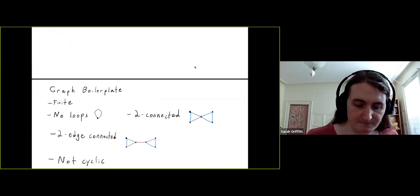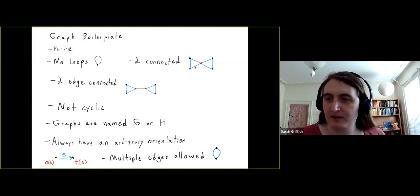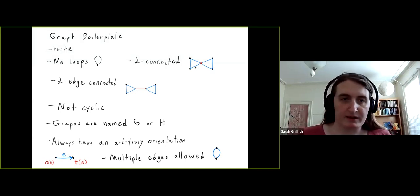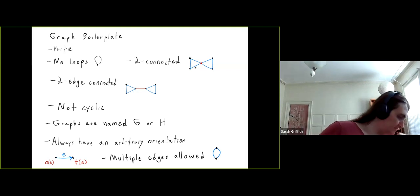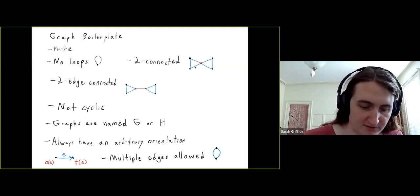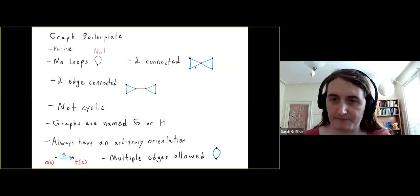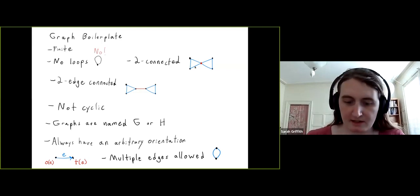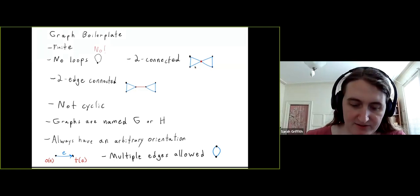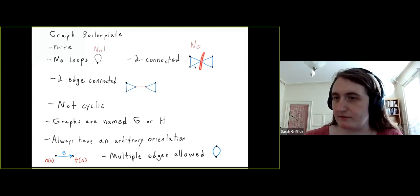When talking about graphs, there's always some boilerplate. First, it's always going to be finite. There are never going to be any loops allowed — by a loop I mean an edge that connects a vertex to itself. It's always going to be two-connected, meaning there's no single vertex I can pick out where removing it cuts the graph into two components.